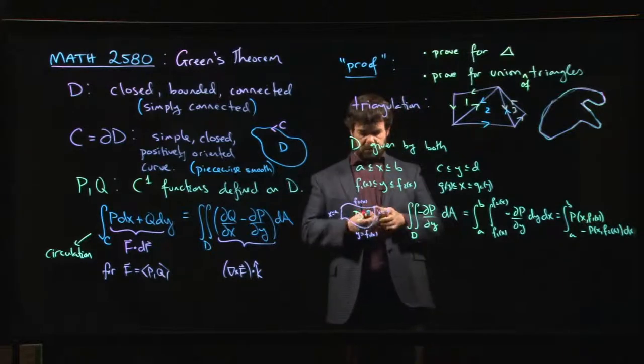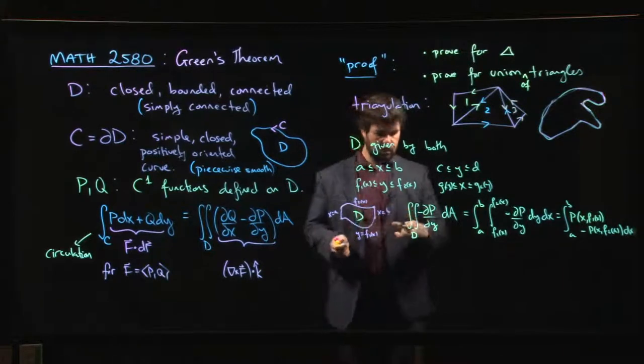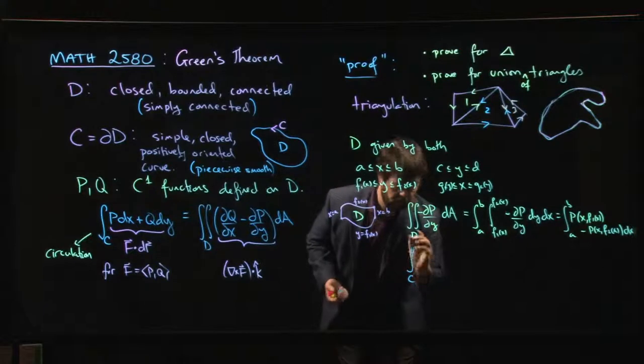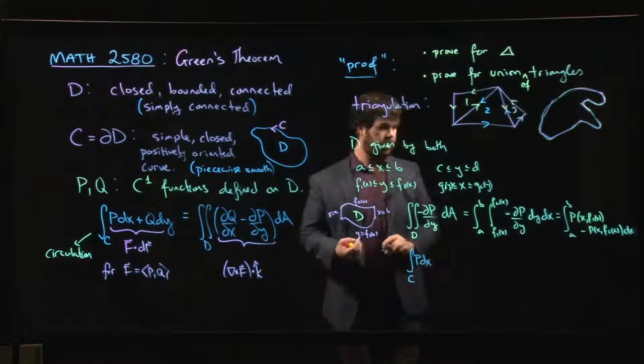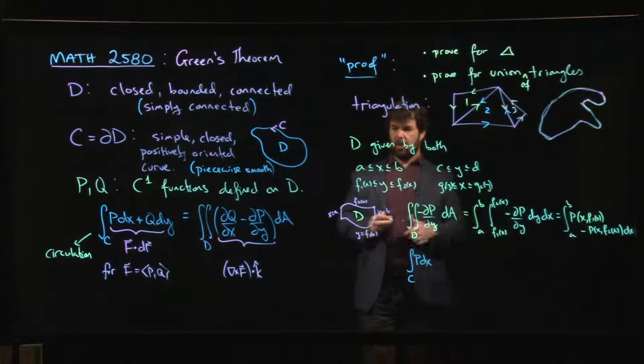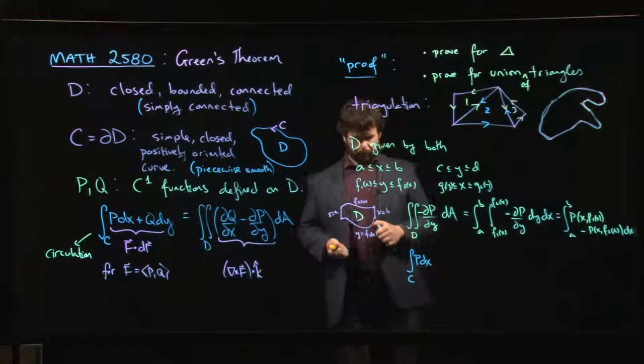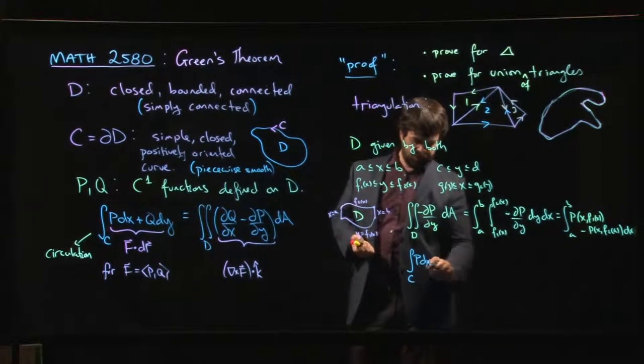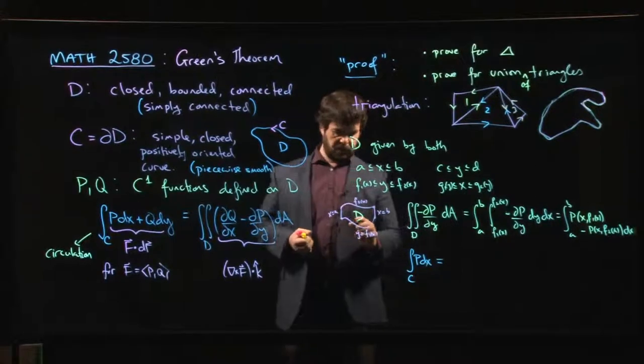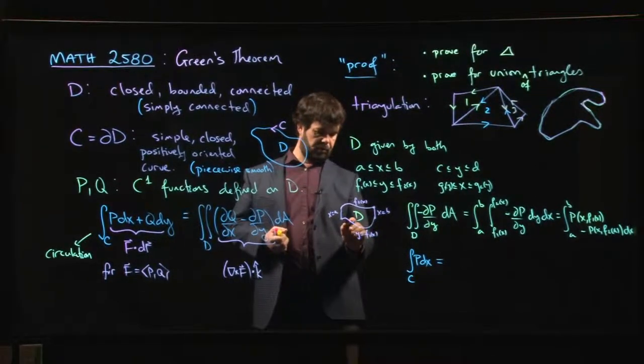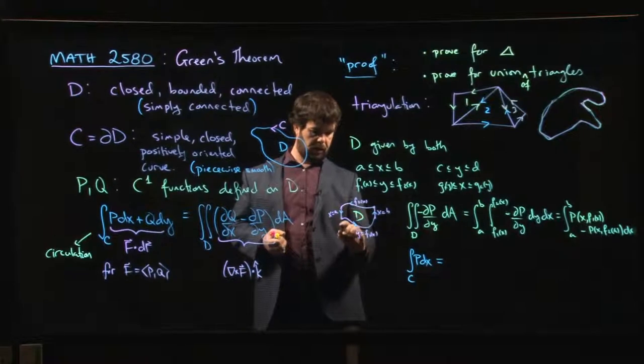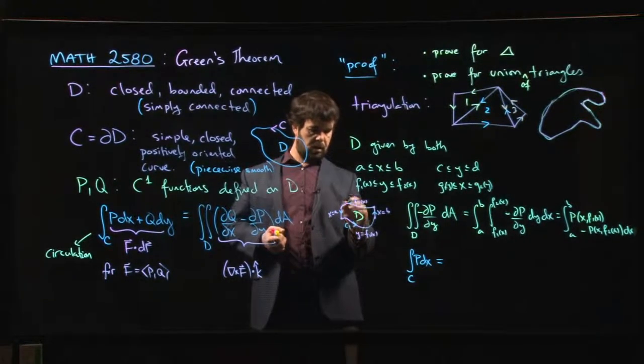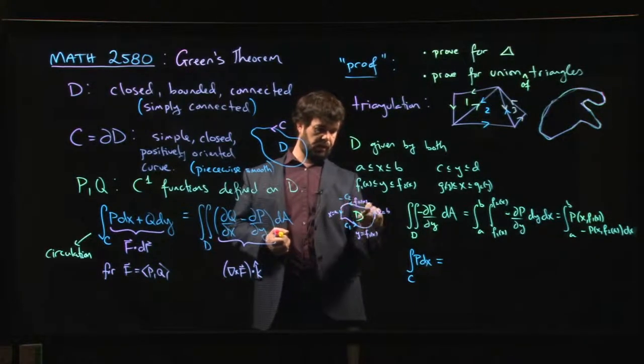On the other hand, if you think about doing the integral around C of just the p dx part, okay? Don't worry about the q dy. Then you say, okay, well, first of all, let's think of it like, so the overall boundary would be like that, right? So let's call that C1. And C2, this is going to be minus C2, because the natural way to orient this curve would be going this way, right?